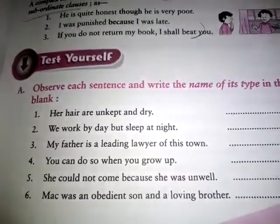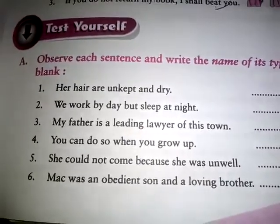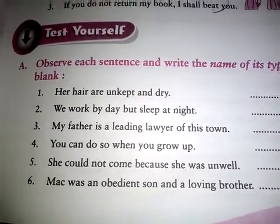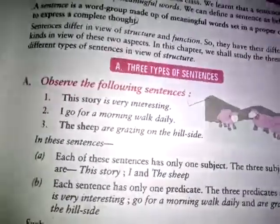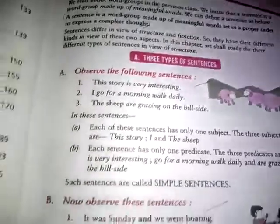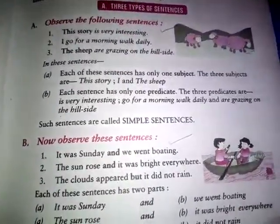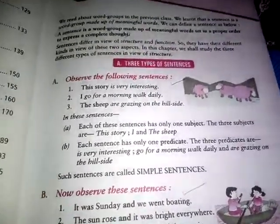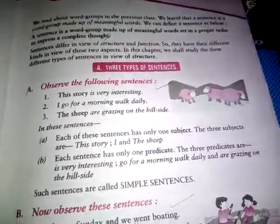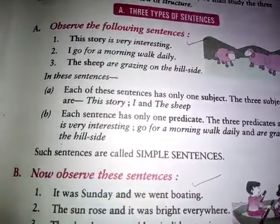मैंने आपको बताया था कि sentences की three types होती हैं: simple sentence, compound sentence, और complex sentence। अब हमें यह जानना है कि sentence कौन सा है और किस तरह का है। तो अगर हम observation करेंगे तो आपको कोई problem नहीं होगी इसको solve करने में। Observe the following sentences।